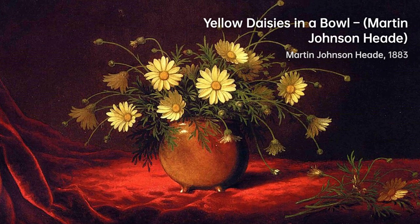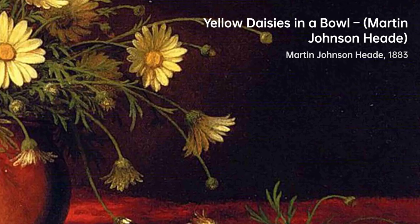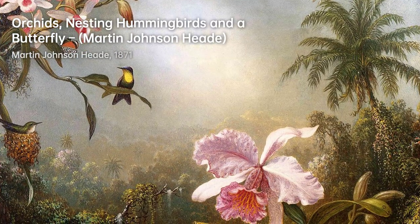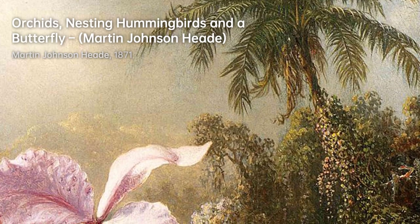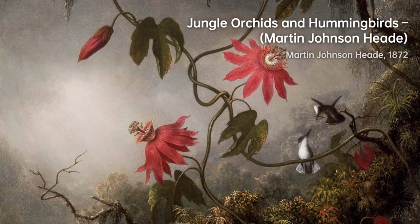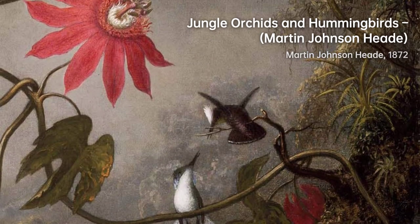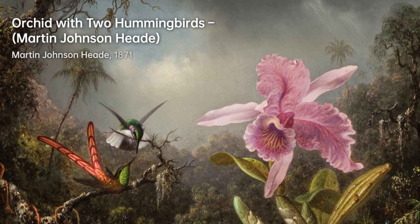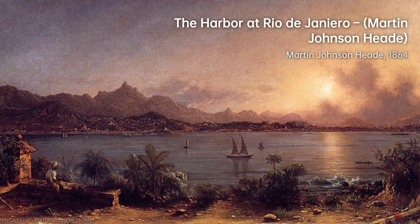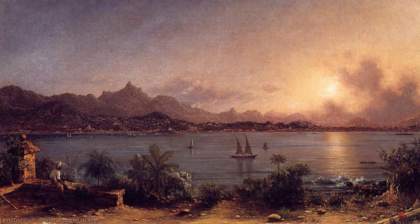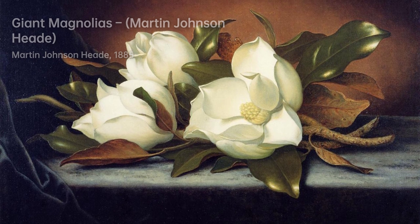During his career, he explored various subjects in his artwork. He is best known for his landscapes, particularly his stunning depictions of the American wilderness. Heade often focused on the beauty of nature, capturing the vibrant colors and intricate details of flowers, birds, and landscapes. His paintings of orchids and hummingbirds are particularly renowned for their exquisite detail and vibrant colors. Heade's meticulous attention to detail and his ability to convey a sense of tranquility and serenity made him a celebrated artist. Despite facing personal tragedies and financial struggles, Heade continued to create art throughout his life, with his artwork evolving to reflect his changing interests and influences.